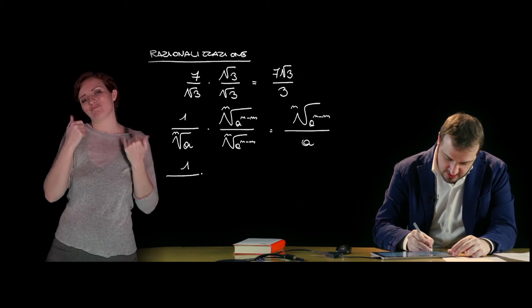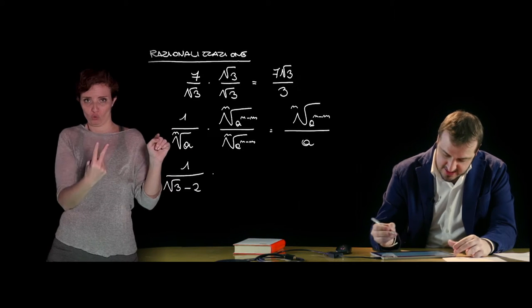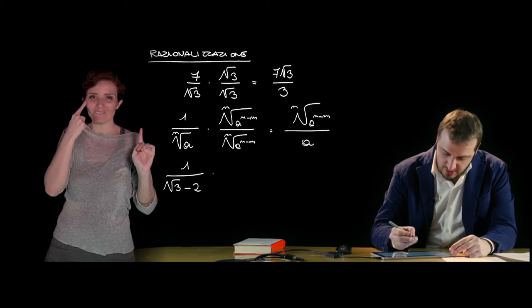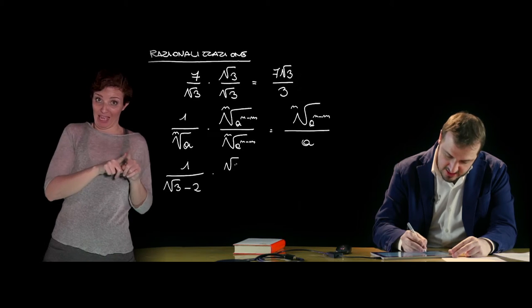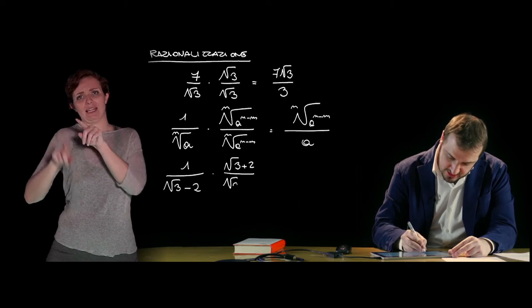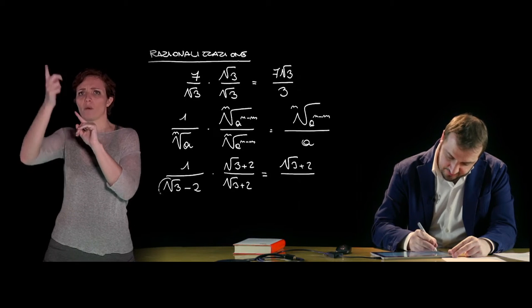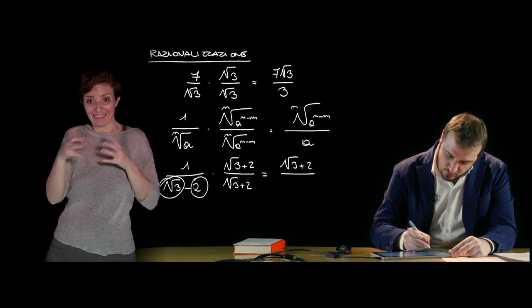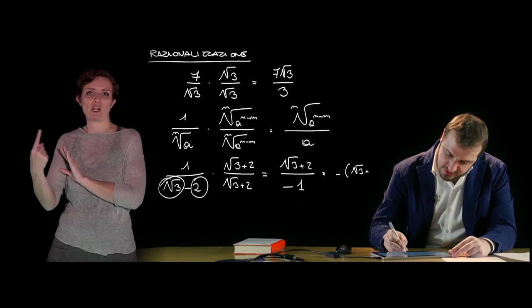The second type of rationalization is when the denominator consists of a sum or difference of two terms, at least one of which is a radical — for simplicity, only square radicals here. For example, 1 divided by (√3 − √2). To eliminate the radical in the denominator, we multiply both numerator and denominator by the conjugate expression: since there is a difference at the denominator, we multiply by (√3 + √2). The numerator becomes (√3 + √2), and the denominator becomes the difference of squares: 3 − 4 = −1, so the result is −(√3 + √2).